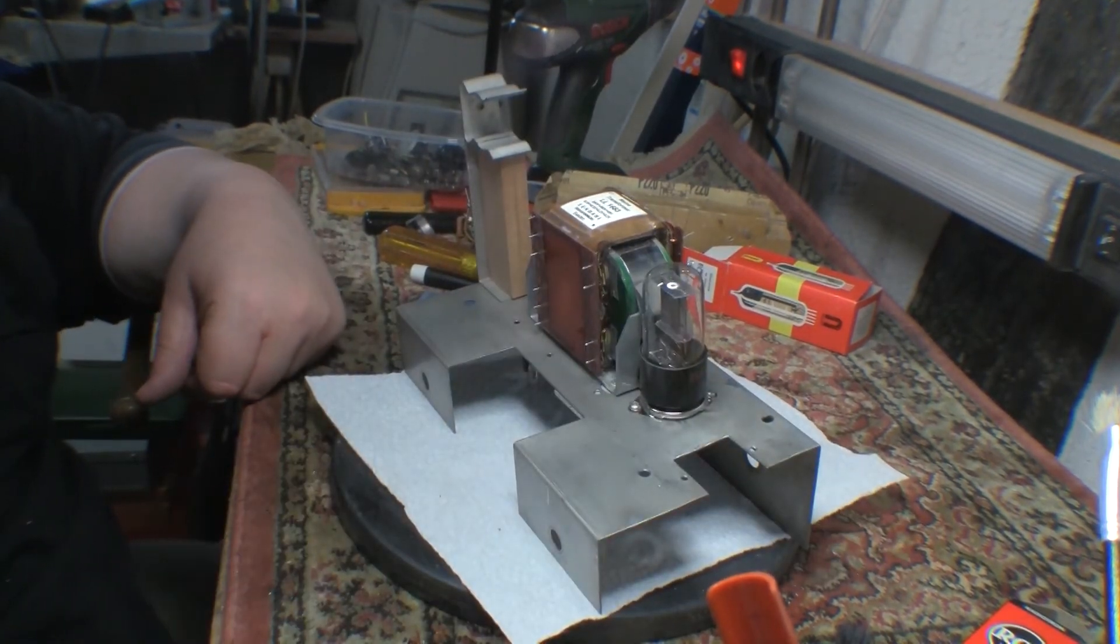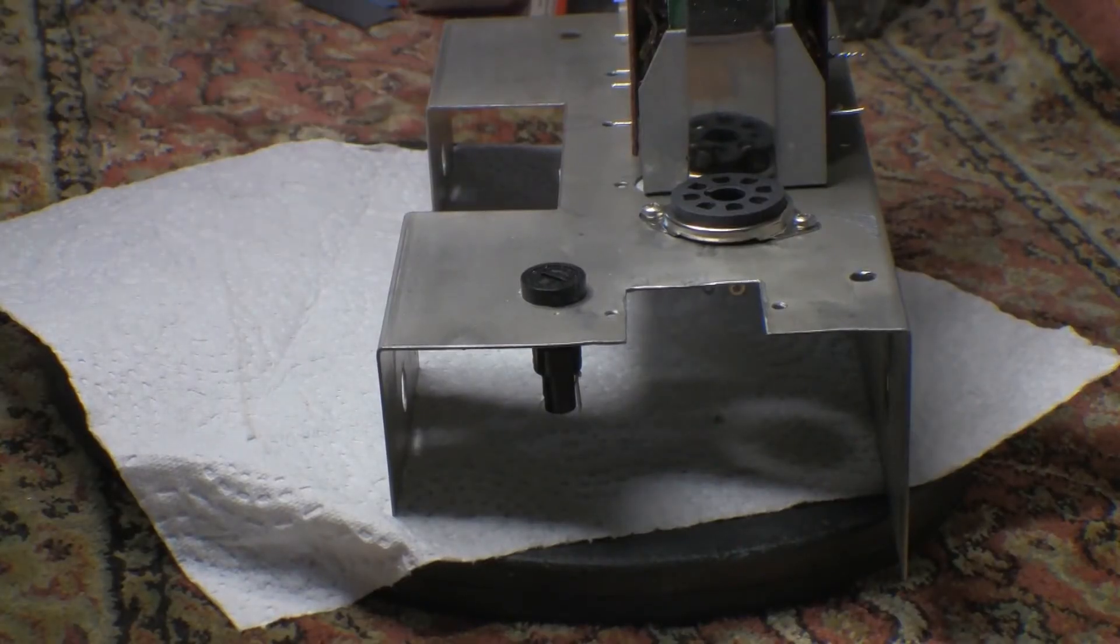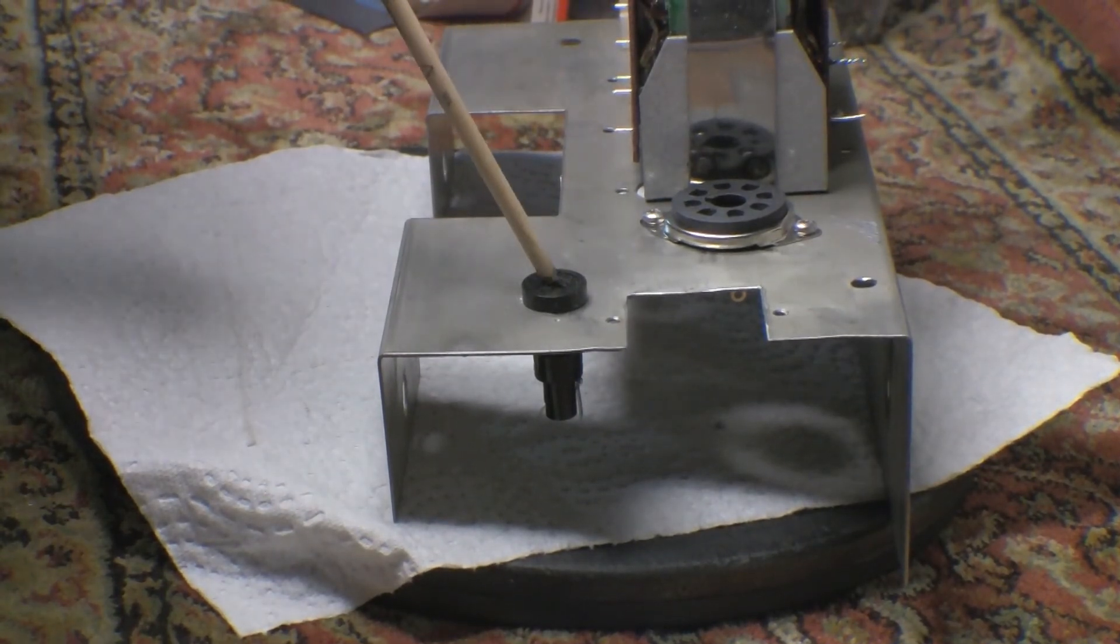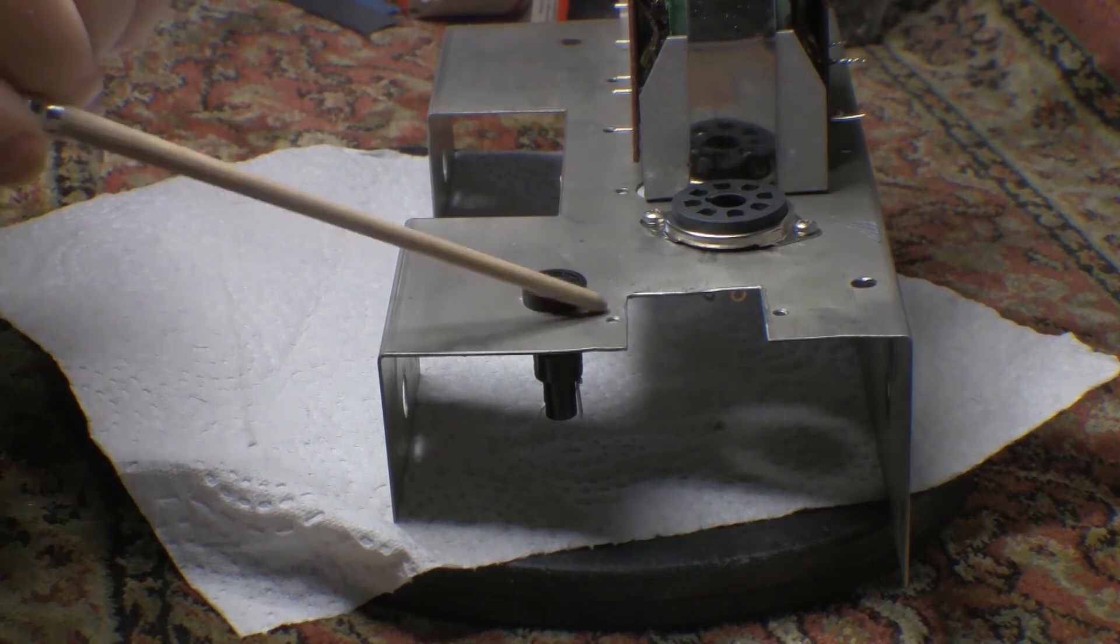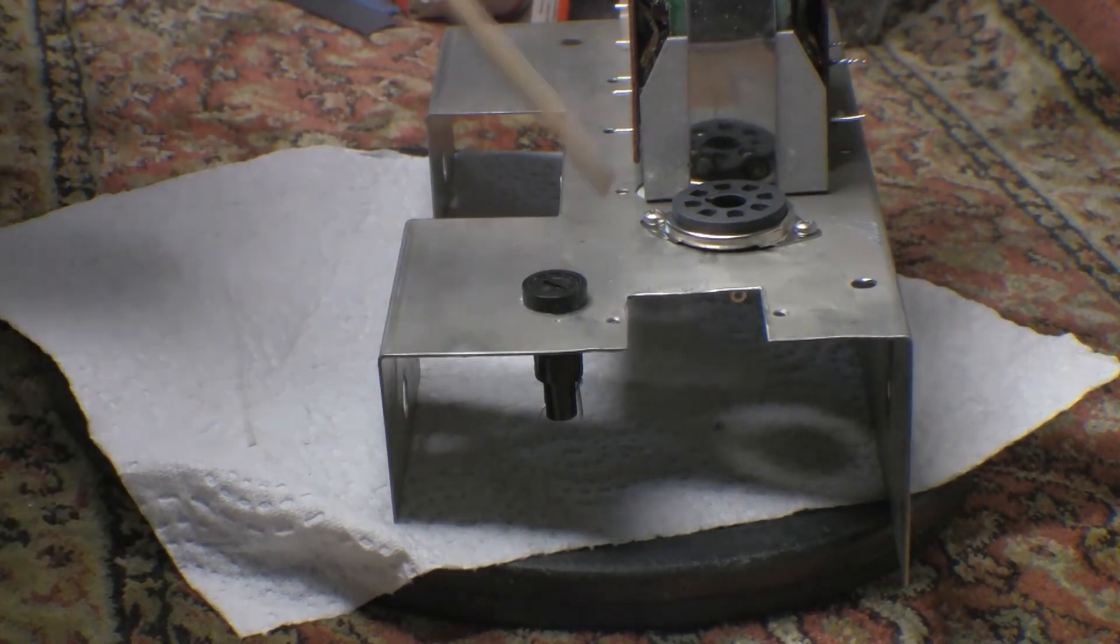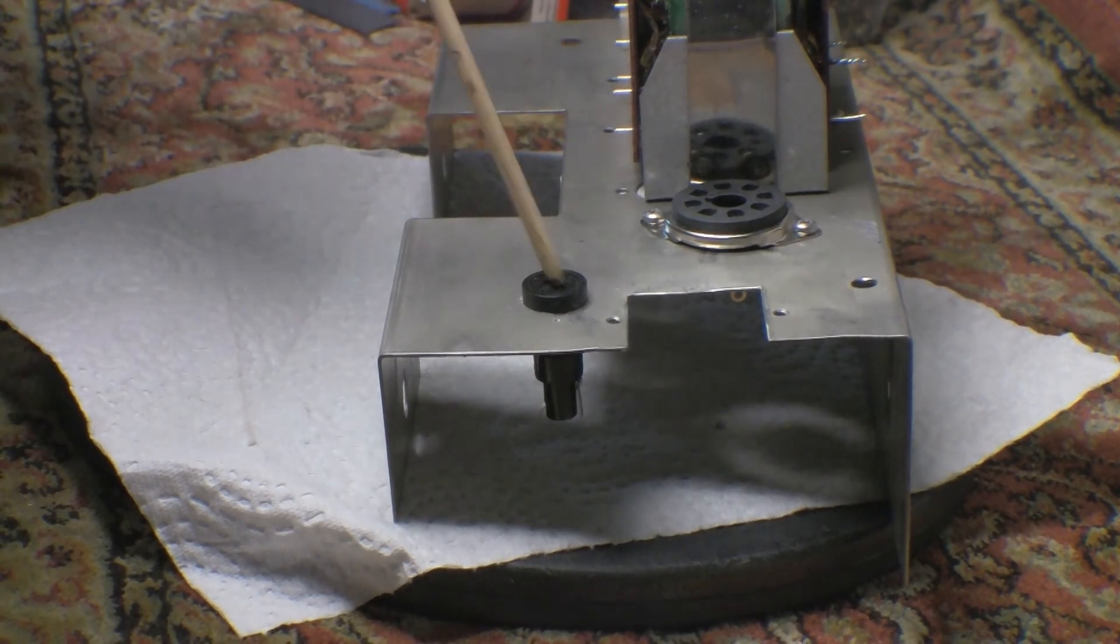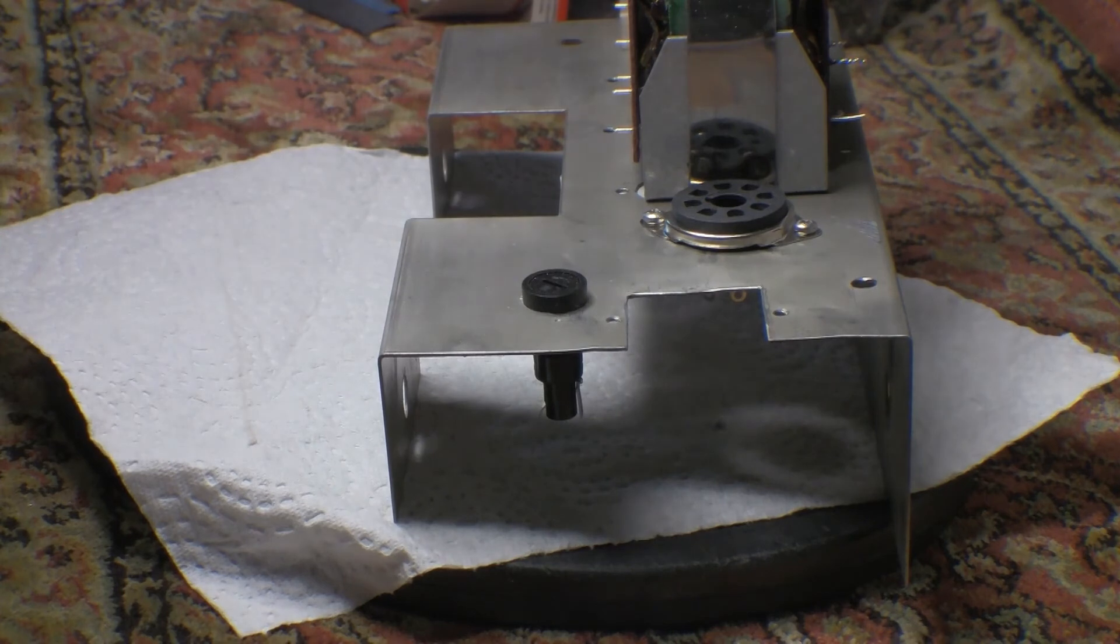One last minute change, I fitted a holder for a line fuse. It's maybe not in the ideal position, but there's so many holes drilled in the subframe that I used an existing hole for the line fuse. So we should be about ready to start wiring this thing up.